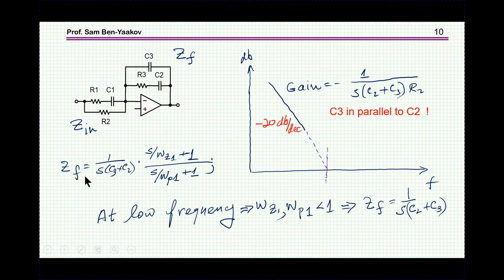And therefore, the gain, which is ZF over Zin, will be 1 over S C2 plus C3 R2. In this particular case, C2 and C3 are in parallel. This is in contrast to what we had before that they were in series. So here we have these two in parallel for the impedance. That's not the pole. This is the impedance.